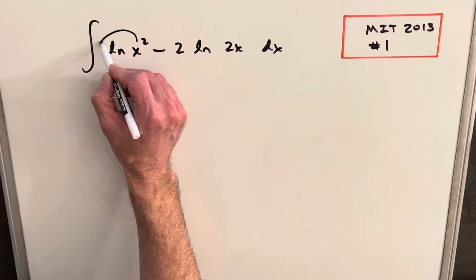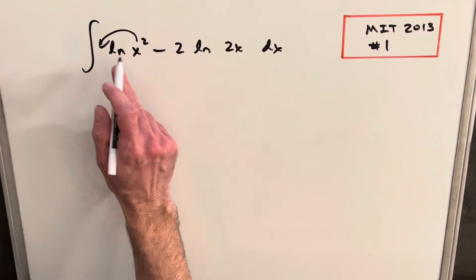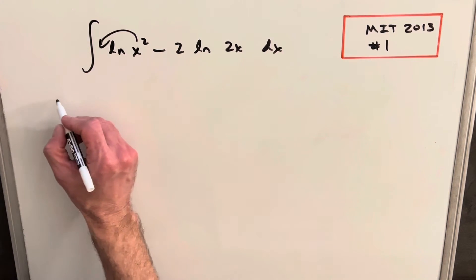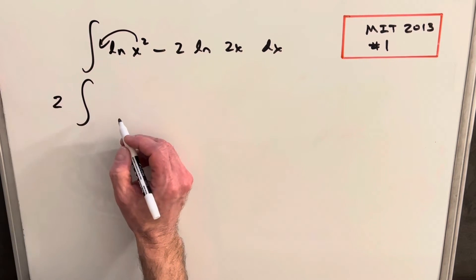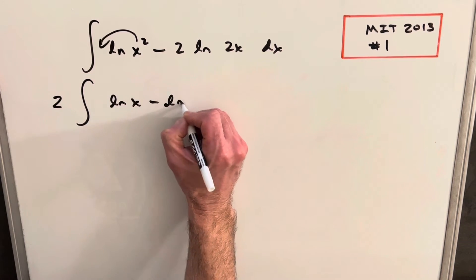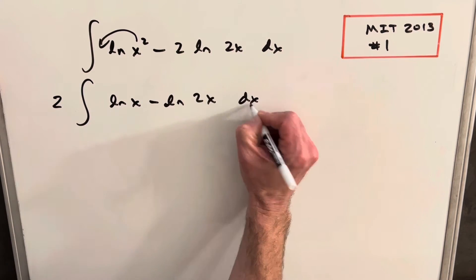What I'm going to do is take this 2 out front, and then if we do that, we've got a 2 on both of these, so I can factor a 2 out front of the integral, so we're going to have ln x minus ln 2x dx.